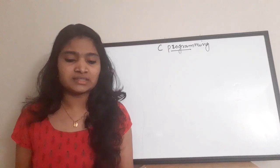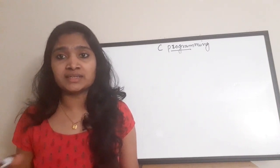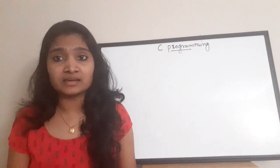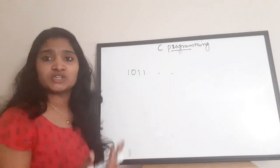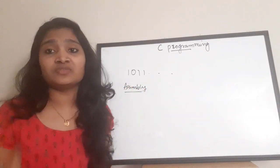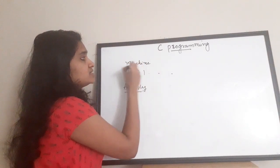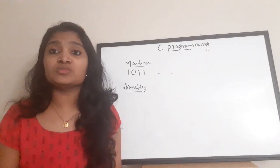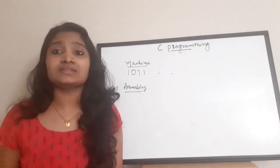The first question is: what are the key features of C programming language? Languages can be classified into three types: machine language, assembly language, and high-level programming language. Machine language is understandable to the hardware, consisting of ones and zeros. Assembly language uses processor-specific keywords or instructions. High-level language is human-understandable code that is later converted to machine language. C is a high-level language.